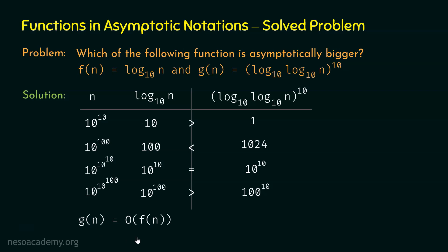The conclusion is that no matter what constant we have, f(n) surpasses g(n). Log n is always asymptotically bigger than (log log n)^k, where k is some constant. With this, we are done with this problem and we understand the relationship between log n and (log log n)^k.